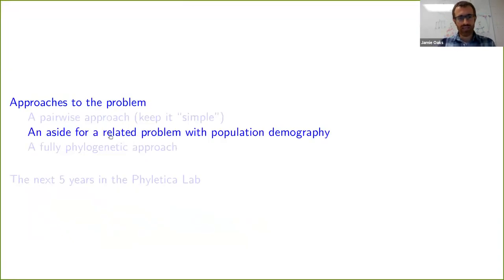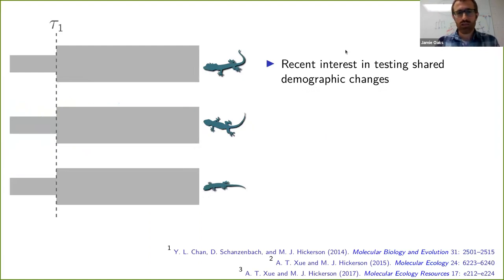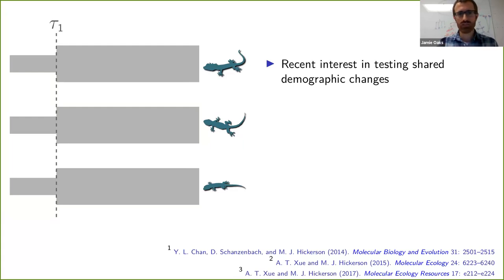Let's take a brief aside to a related problem. Instead of looking at population divergences, let's look at changes in population size — demographic changes. Recently there's been a lot of interest in looking for shared population size changes across populations, and there are a lot of interesting ecological and biogeographic questions you could approach by being able to test for this.